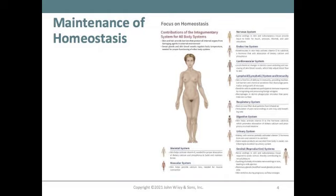In the endocrine system, keratinocytes in the skin help activate vitamin D to calcitriol, a hormone that aids absorption of dietary calcium and phosphorus. In the cardiovascular system, local chemical changes in the dermis cause widening and narrowing of the blood vessels, which helps blood flow to the skin.